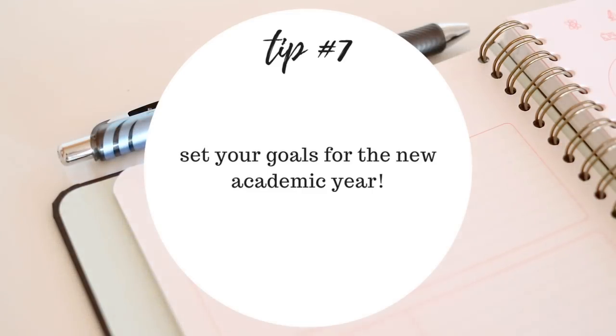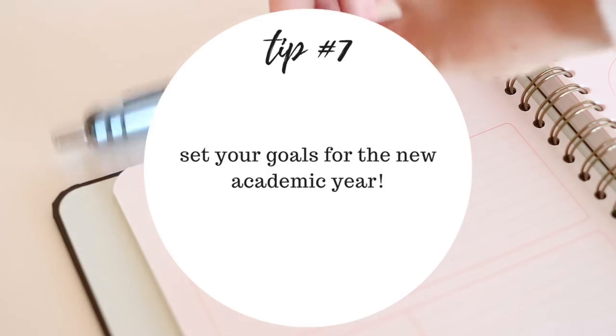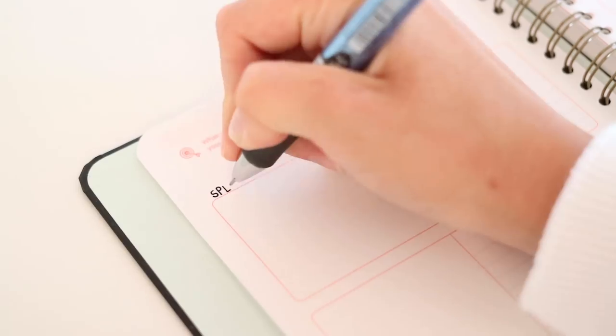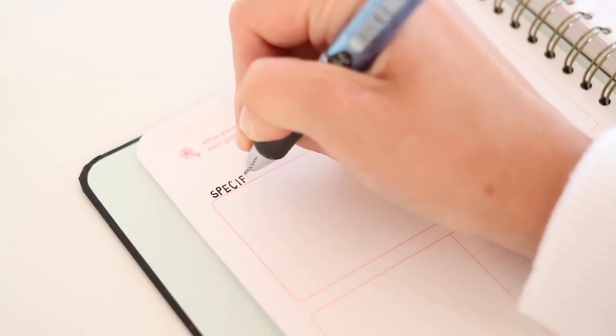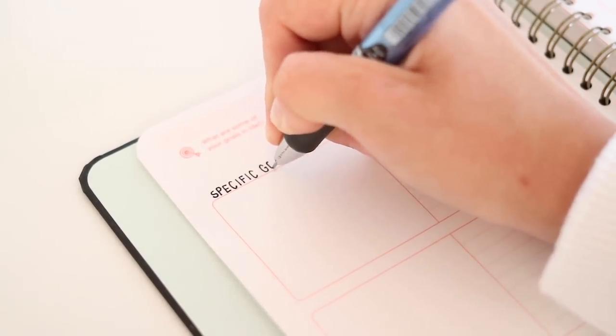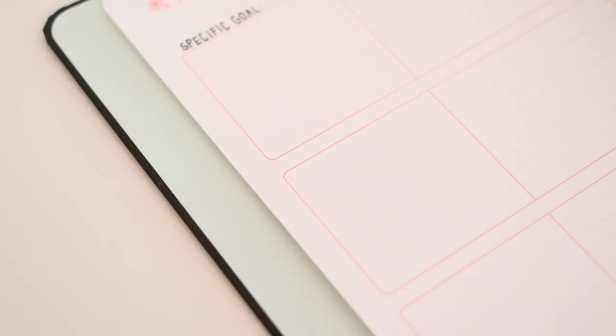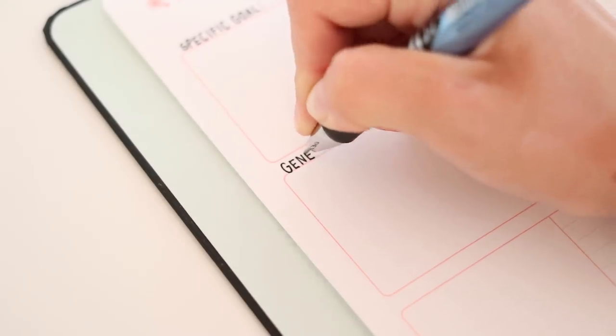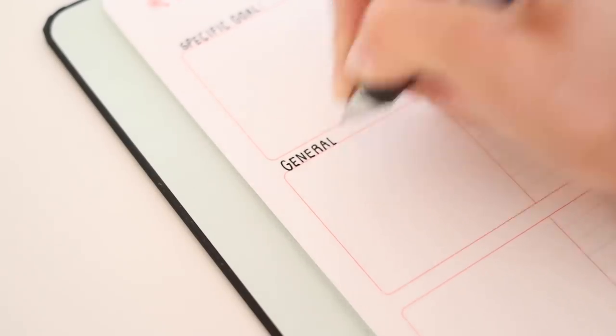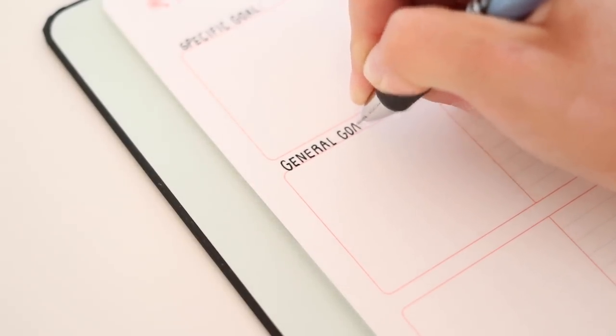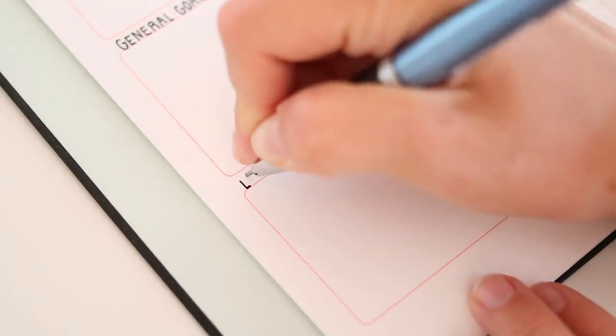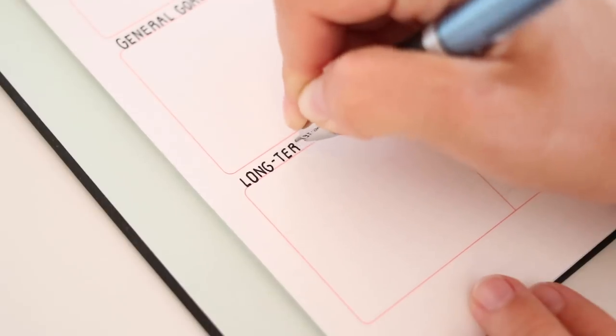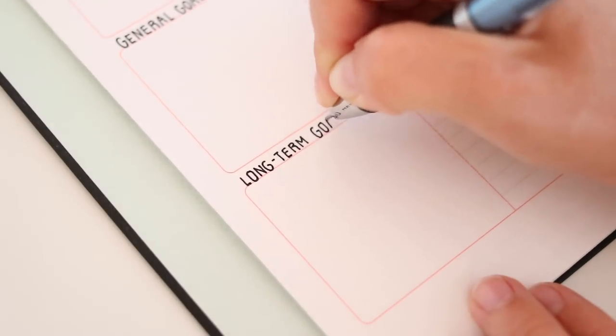My final tip is to set your goals for the new academic year. When setting goals, I deal with three types of goals. The first type is specific goals, which can be, for example, I want to raise my grade in one class from AC to AB. Then there are general goals, which could be I want to be more confident when speaking up in discussions, or I want to get better at dealing with procrastination. And then finally, there is the long-term goal, which could be related to a career you want to pursue, or whatever you want to complete in the long term.